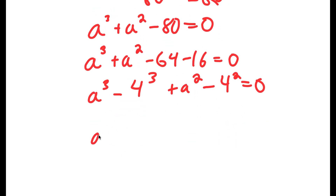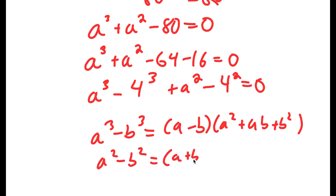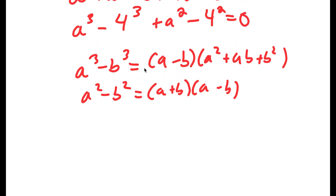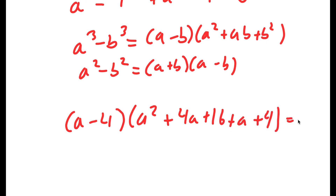If I have something in the form a to the power of 3 minus b to the power of 3, this is going to equal a minus b times a squared plus ab plus b squared. And if I have something in the form a squared minus b squared, this is equal to a plus b times a minus b. So using these two properties, I'm going to end up with a minus 4 times a squared plus 4a plus 16 plus a plus 4, is equal to 0.